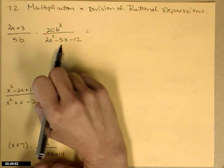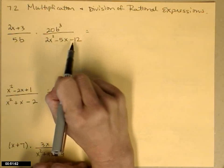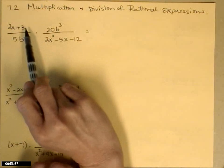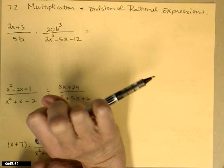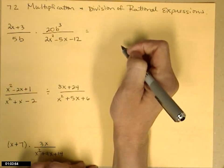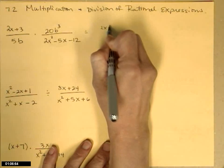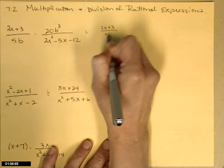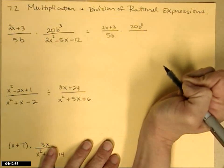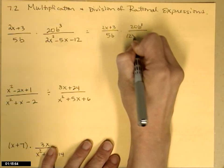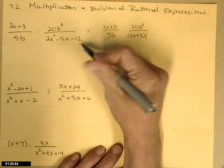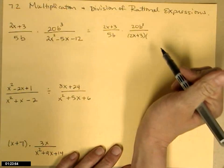So let's take a look: 2x squared minus 5x minus 12. In order for this to give me something worthwhile, it would help if there was a factor of 2x plus 3 after I've done my factoring, so that I could cancel that. I don't know if it will work or not, but I'm going to guess that that's one. So I'm going to copy that first fraction, copy the 20b cubed — that's not going to change much — and then I'm going to guess that 2x plus 3 is one of the factors of that denominator.